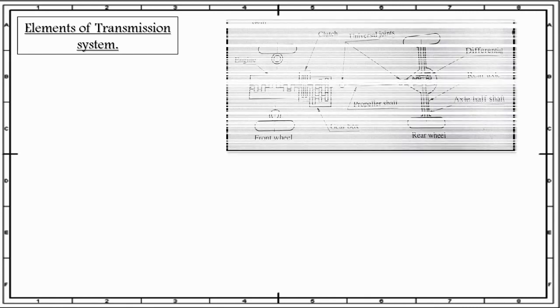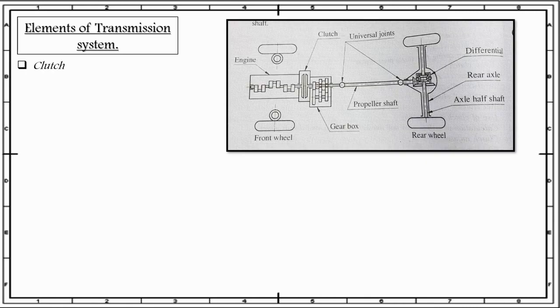In any vehicle, the transmission system is made up of six essential components which we are going to discuss one by one. The first one is the clutch, which comes directly after the engine as illustrated in the figure. The clutch allows the engine to be separated from the rest of the transmission system when starting the engine, shifting the gear, stopping the vehicle, and idling the engine. The clutch also permits the engine to take up the driving load of the vehicle gradually and without shock.